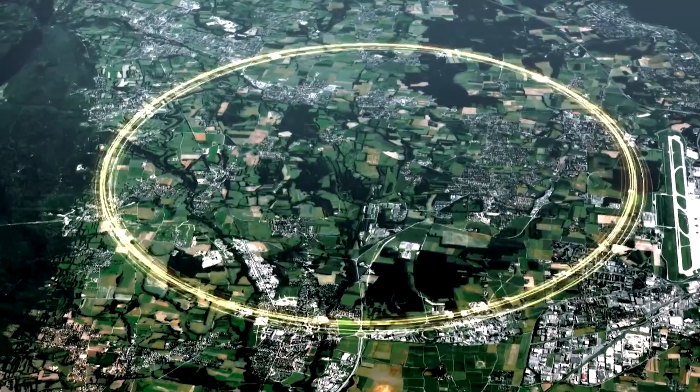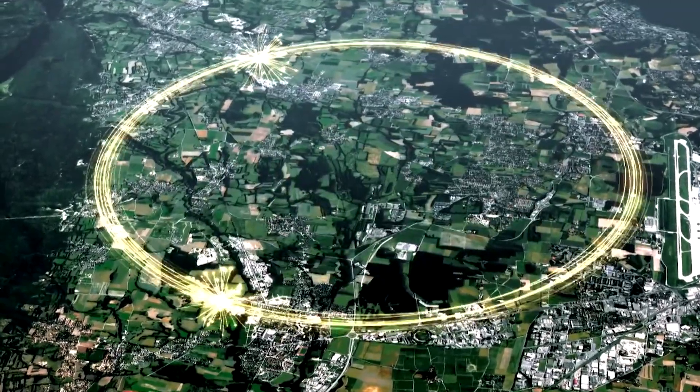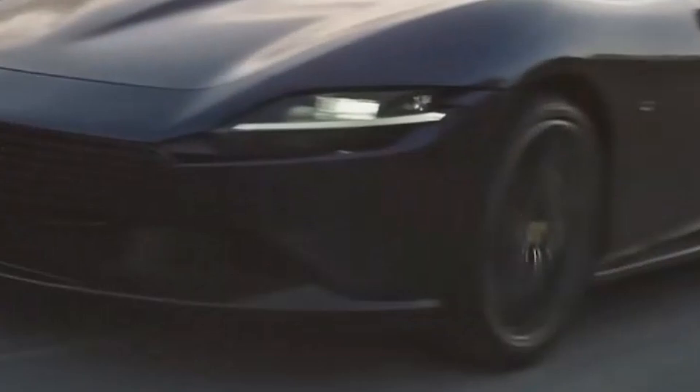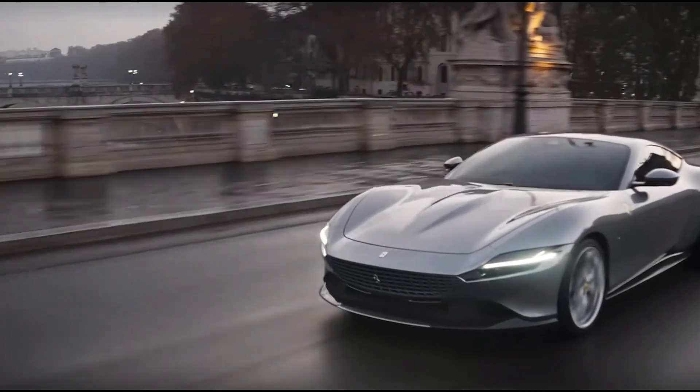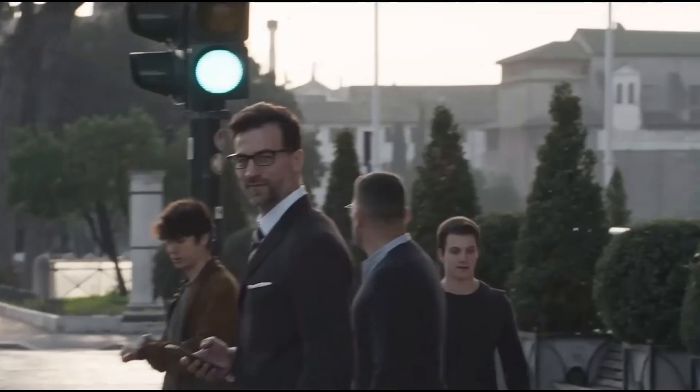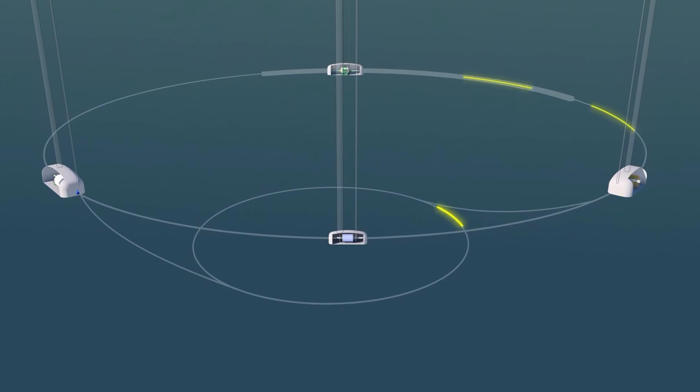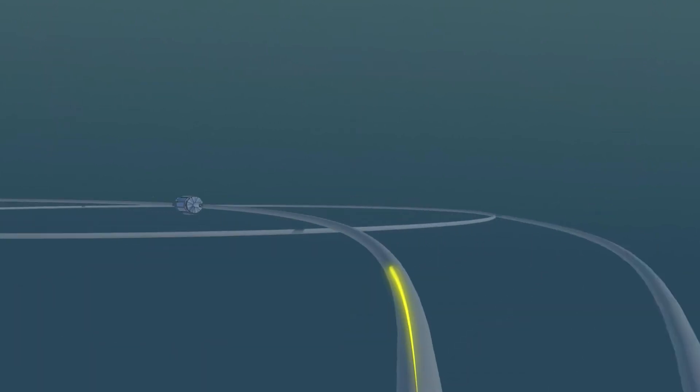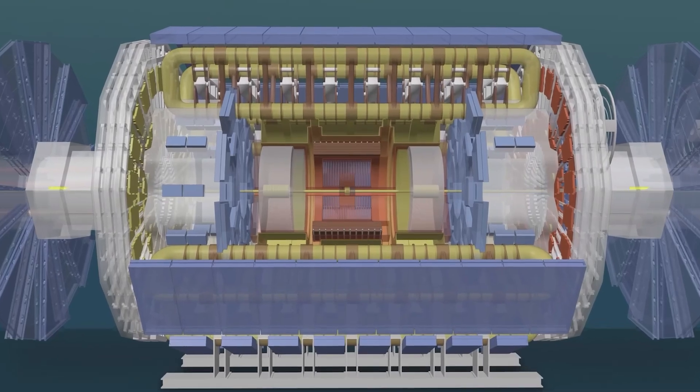So why is it so huge? Simple. The faster you want particles to go, the bigger the track you need. Ever try driving a Ferrari on a cul-de-sac? Yeah, you want a racetrack too. In the LHC's case, it needs all that room to keep particles on track while they're zooming around at near light speed.